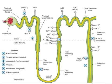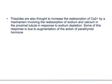Loop agents cause efflux of calcium, potassium, sodium, and magnesium from the thick ascending limb. This is what you should remember about loop agents — they act on the thin limb, ascending limb, and thick ascending limb. Thiazides act on the distal convoluted tubule. Aldosterone antagonists act at the level of the collecting ducts. Acetazolamide acts on the proximal convoluted tubule, where it affects Na⁺, H⁺, and HCO₃⁻ transport.